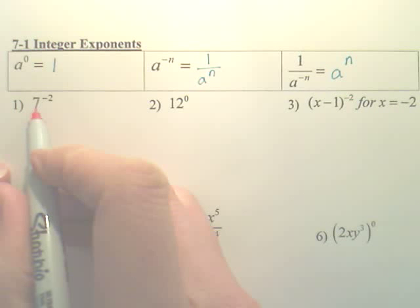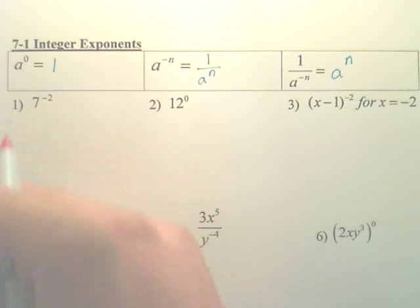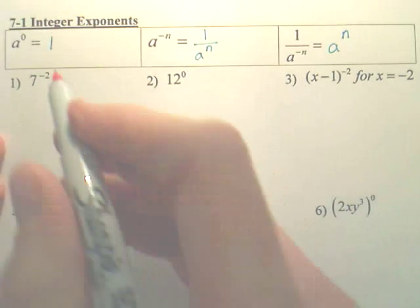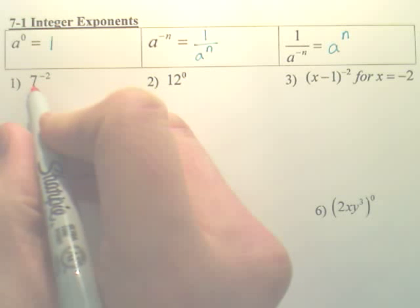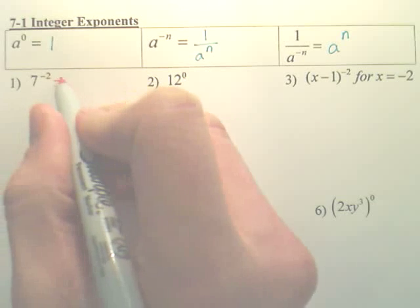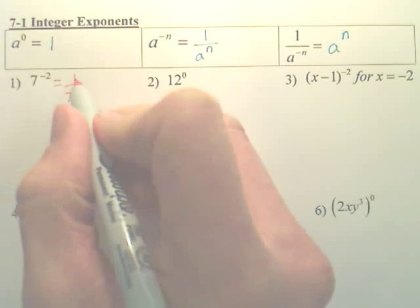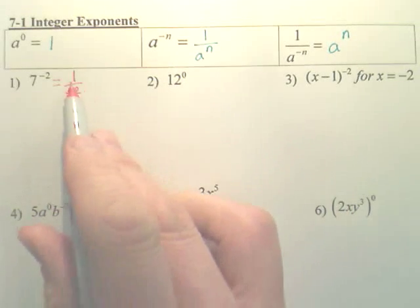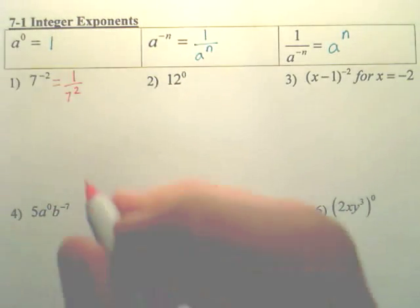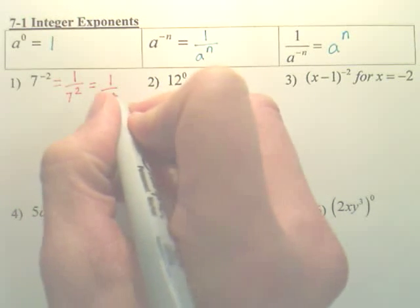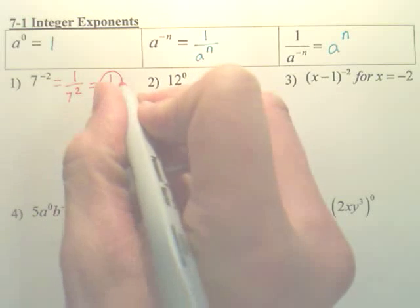If I have 7 to the negative 2, and if I want to solve that, what I'm going to do is change that to 1 over 7 squared. I use this property right here. Now, from here, it's real simple. That would end up being 1 over 49. That's your answer.